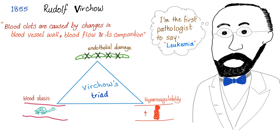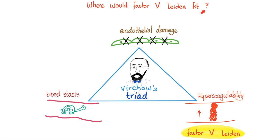Back in the day, Rudolf Virchow — old-school guy with an old-school pair of glasses, old-school suit, and old-school beard with no wax — discovered Virchow's triad: endothelial damage, blood stasis, and hypercoagulability. By the way, he's also the first one to coin the term leukemia. So where does Factor V Leiden fit? It's a hypercoagulability — that's for sure.